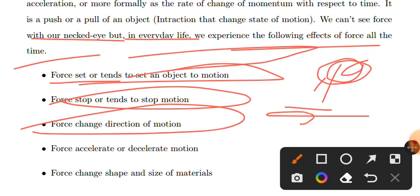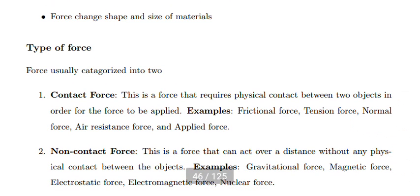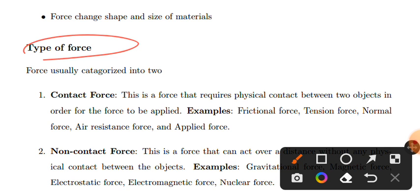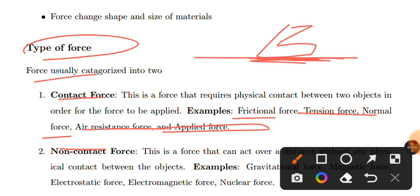Force in dynamics has seven types. These are divided into contact forces and non-contact forces. Contact forces include: frictional force, tension force, normal force, applied force, and distance force. Frictional force acts along a surface. It has two types: static friction and kinetic friction.